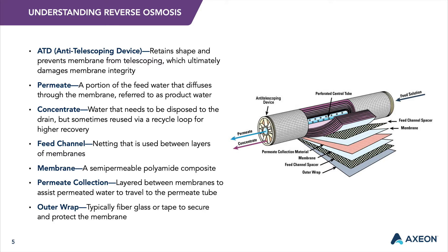Typically, a spiral-wound configuration offers significantly lower replacement costs, simpler plumbing systems, easier maintenance, and greater design freedom than other configurations, making it the industry standard for reverse osmosis and nanofiltration membranes in water treatment.